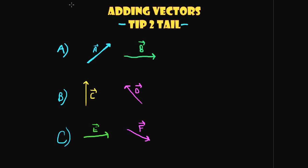Welcome to another video. Today we'll be talking about adding vectors. The first method we'll discuss is the tip-to-tail method — it's a graphical method where you're putting two vectors together. The name says it all: we have vector A here, and tip-to-tail means we place the tail of the second vector at the tip of the first.